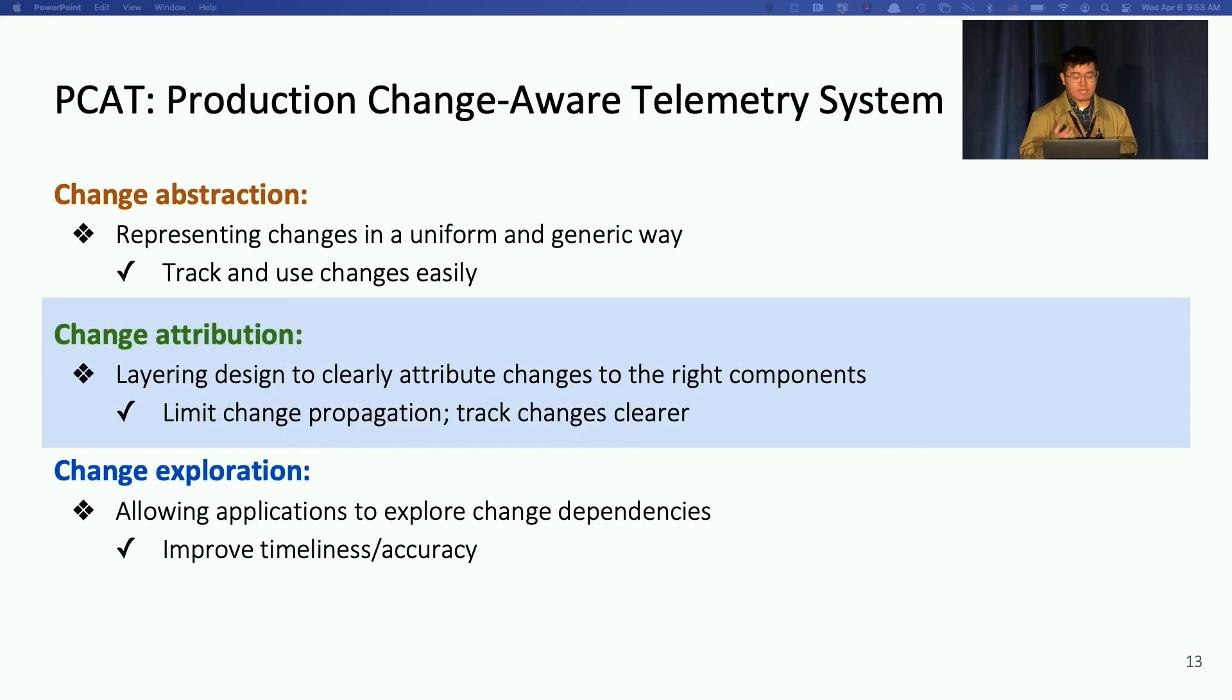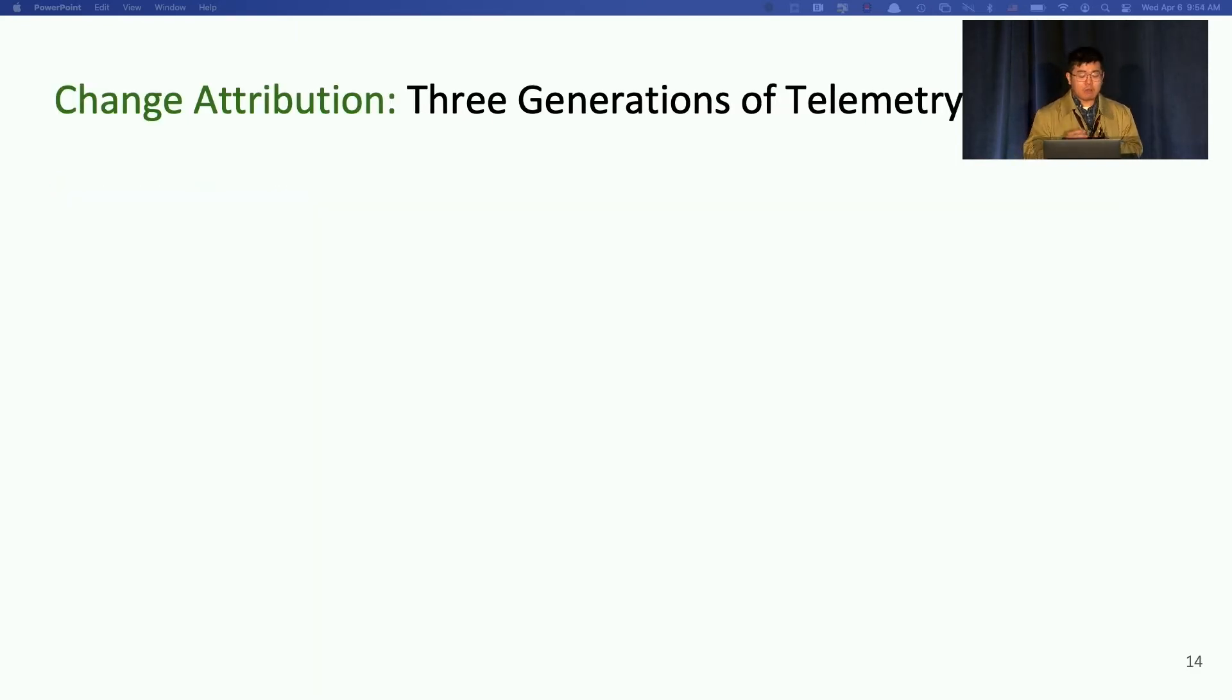So now we have the Change Cube abstraction. However, without a good layering design of this telemetry system, it's still hard to attribute various changes, various Change Cubes to the right layer. So that introduced a change attribution in PCAT. So our telemetry system actually experienced three generations of evolving towards a layering or modular design to achieve change attribution.